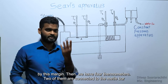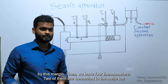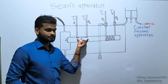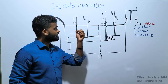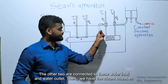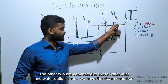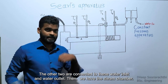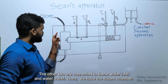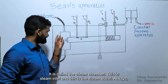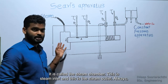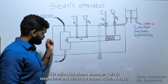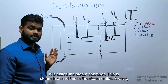Then we have four thermometers. Two of them are connected to the metal bar, and the other two are connected to the water inlet and water outlet. Then we have the steam chamber, which is called the steam chamber. This is the steam inlet and this is the steam outlet.